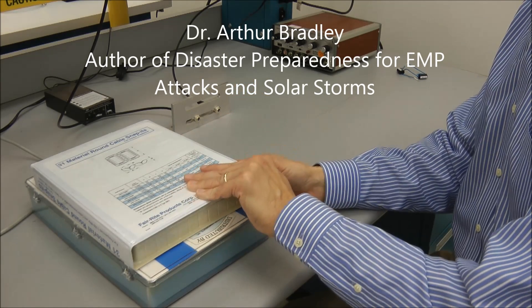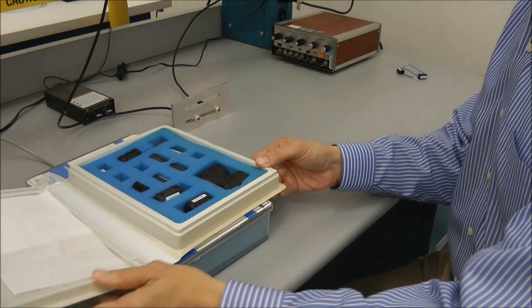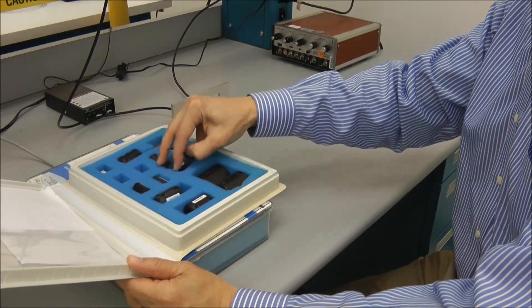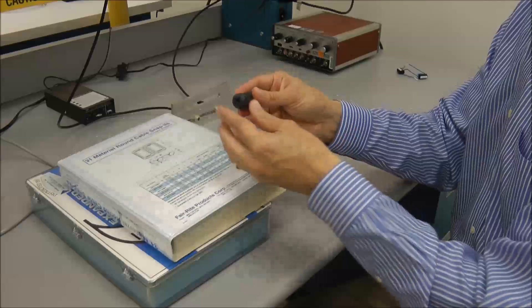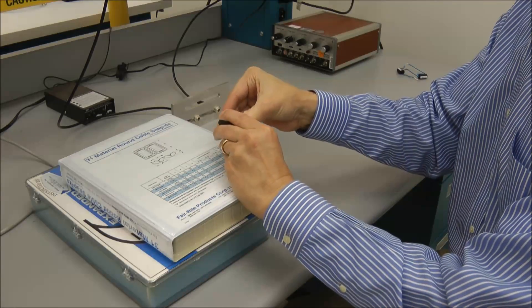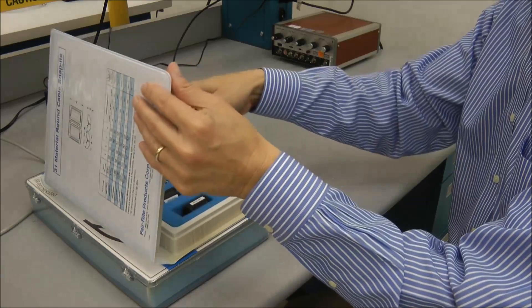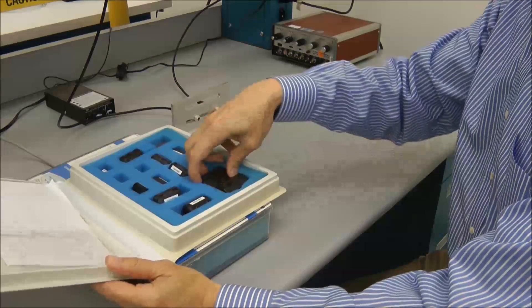Now, there are many different kinds of ferrites that you can buy. This case, for example, contains some of these clip-on ferrites that just basically open up and clip around a cable. They're really convenient to use. I do like these, and they work just fine.